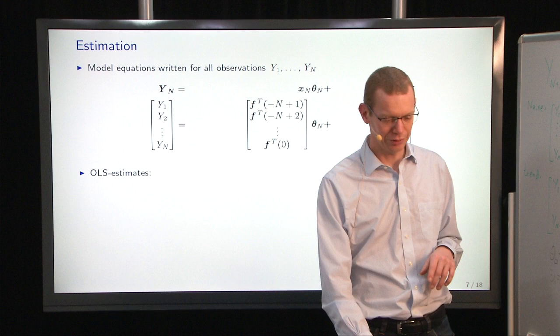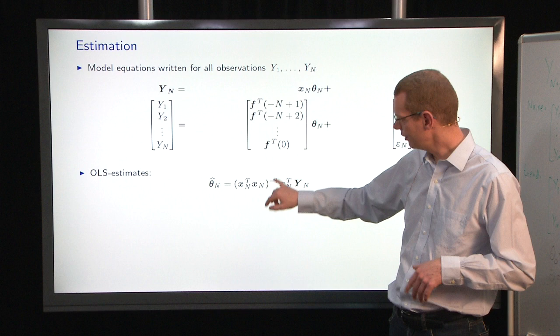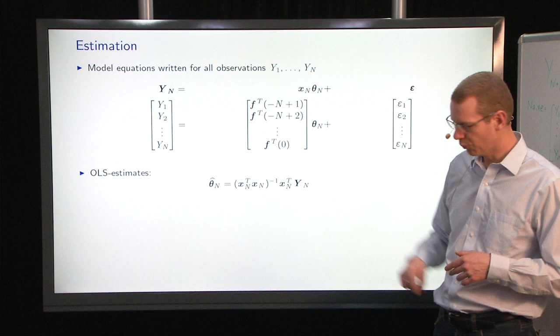If we do the ordinary least squares estimator, we call that from last week, we define this matrix here as Xn. As the design matrix, we have Xn transpose Xn, the whole thing inverse, and then multiply that on Xn transpose and Yn.